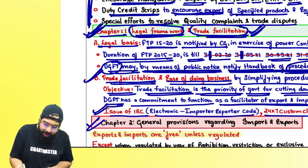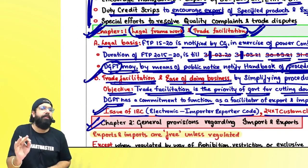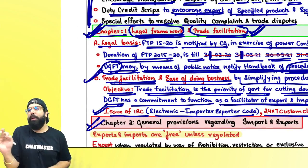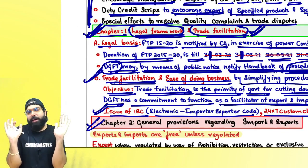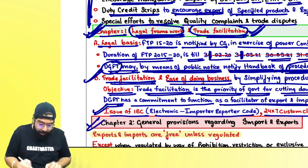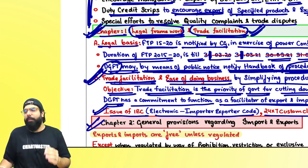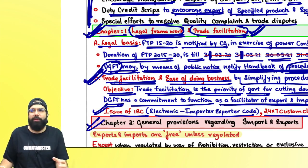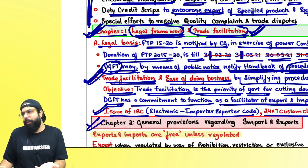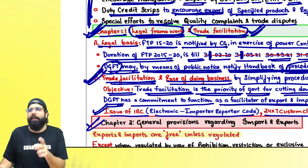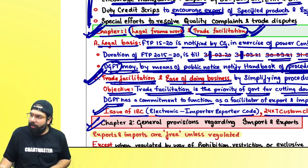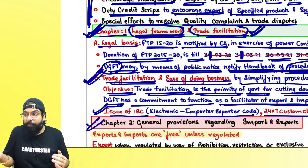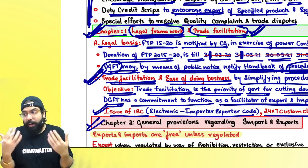Chapter 1 summary: legal framework — FTP 2015-20 is created under the Foreign Trade Development and Regulation Act 1992, section 5 gave the power. Trade facilitation and ease of doing business: they simplified procedures, introduced online import-export code application, 24×7 clearance, launched SWIFT, and deferred payment facility — all under the foreign trade policy.